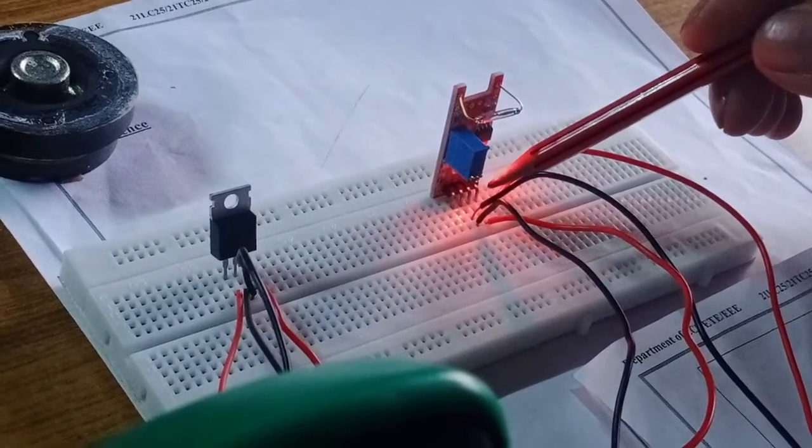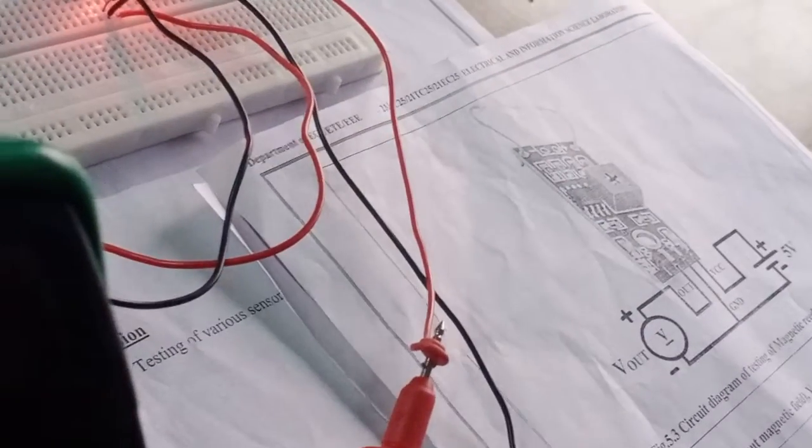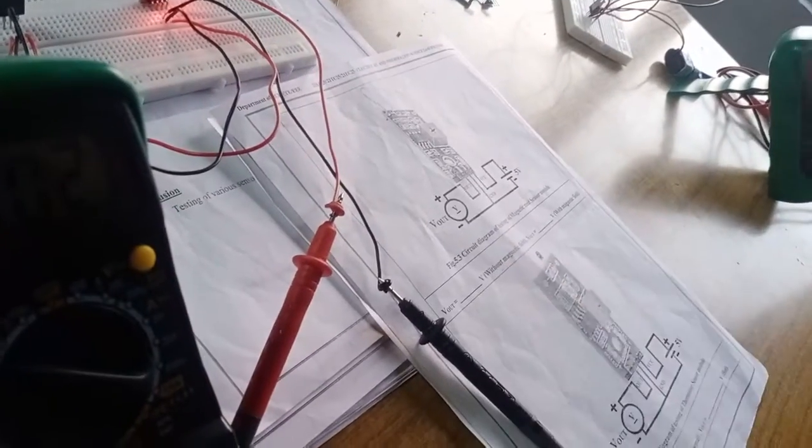Now we have made the connection as per the circuit diagram. We are going to measure the output voltage without magnetic field.